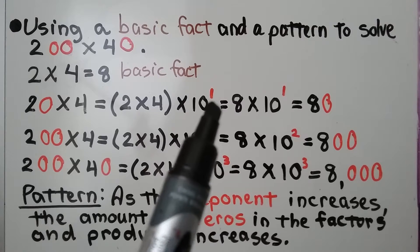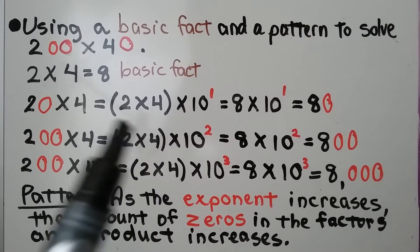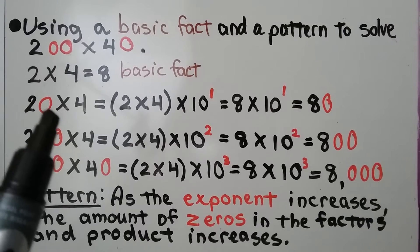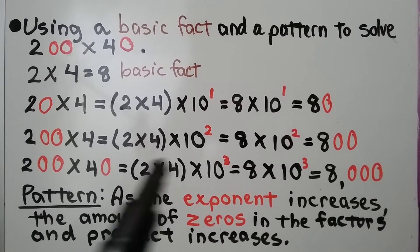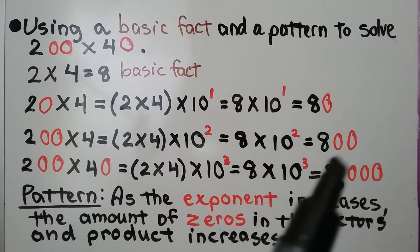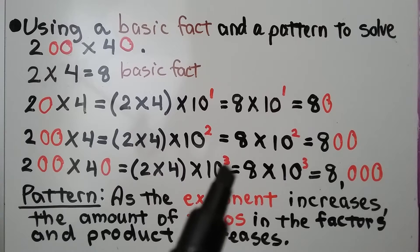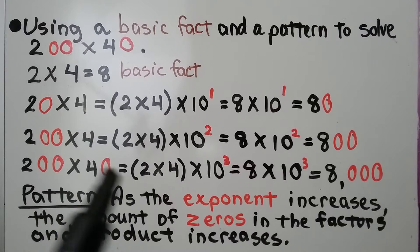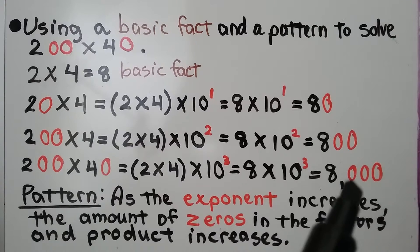With an exponent of 1, we had one zero. With an exponent of 2, we have two zeros, and the product has two zeros. With an exponent of 3, we have three zeros in the factors and three zeros in the product.